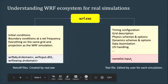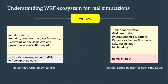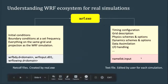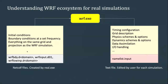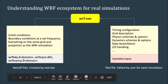WRF.exe needs a namelist.input, which contains the timing configuration — when you want your simulation to run, from what date to what date, the time step size, which physics schemes and dynamic schemes you want to use, and whether you want to do data assimilation. It's a text file edited by the user. You also need initial conditions and boundary conditions, and everything needs to be on exactly the same grid and projection as the WRF simulation. Those files are NetCDF files created for you.